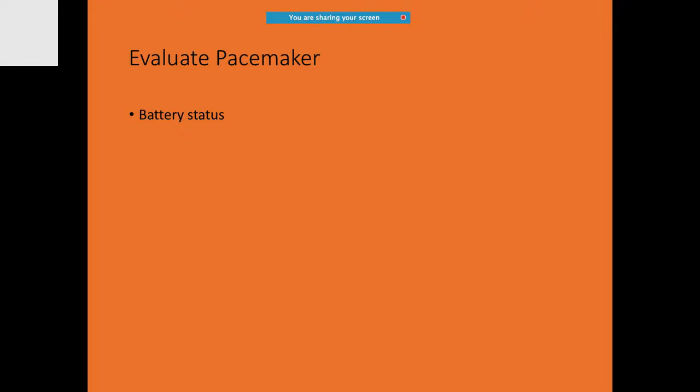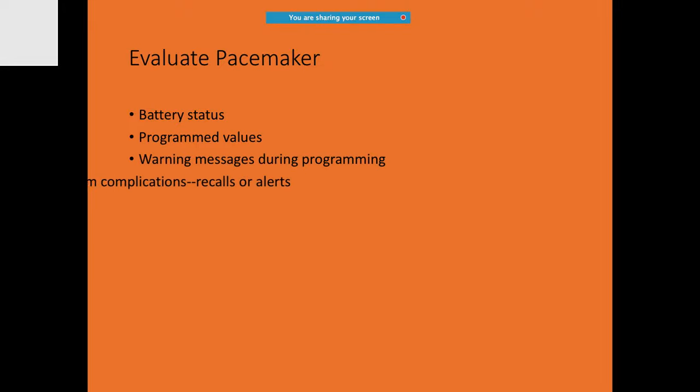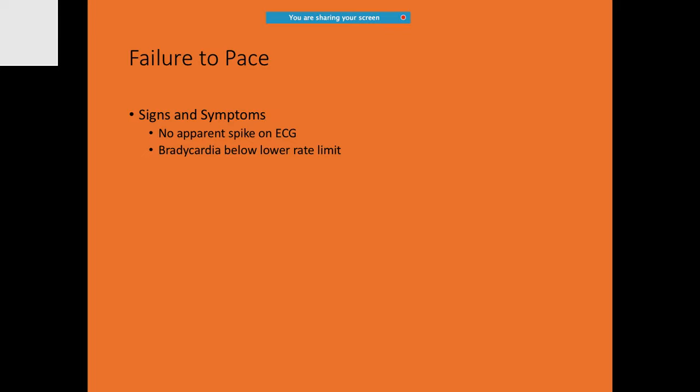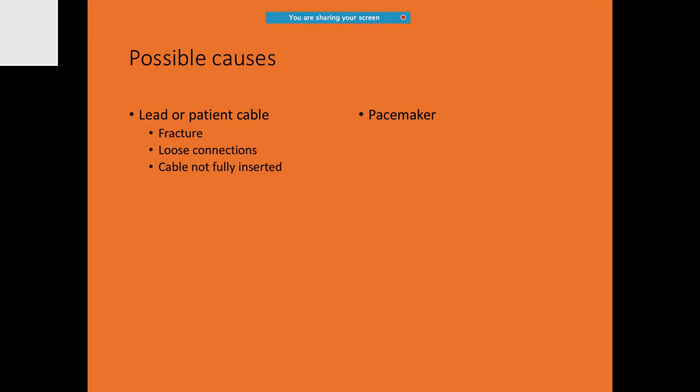Sometimes on careful ECG review you may notice failure to pace: no apparent spike on the ECG and heart rate below the lower limit — you may see a junctional or ventricular beat. Possible causes include lead fracture, loose connection, or cable not fully inserted. For a permanent pacemaker, also check for battery failure or output programmed too low.